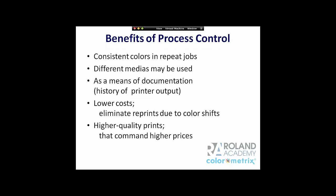What are the benefits of process control? You can get consistent colors on your repeat jobs. You can use different medias — a car wrap media or a signage media — and match the same color on both, thinking about brand colors. It's a means of documentation showing what your printer has been doing since the day you bought it, through a run chart that shows if it was able to produce the same color over time. Ultimately, it will lower cost by eliminating reprints due to color shifts and create higher quality prints, allowing you to command a higher price.